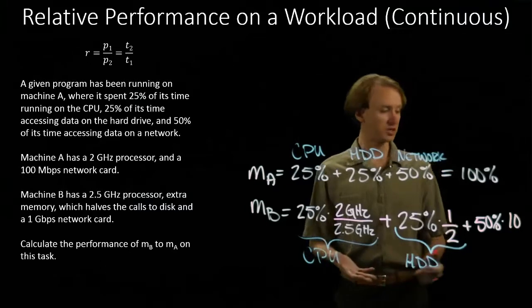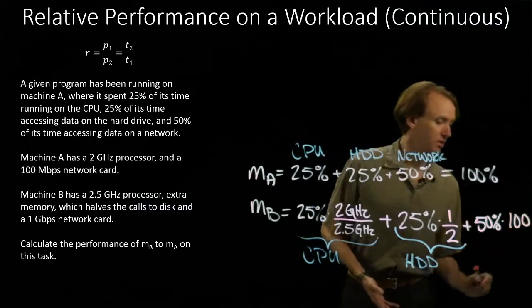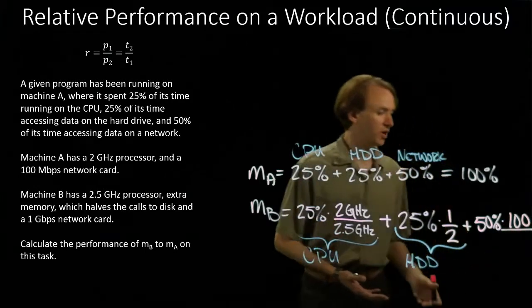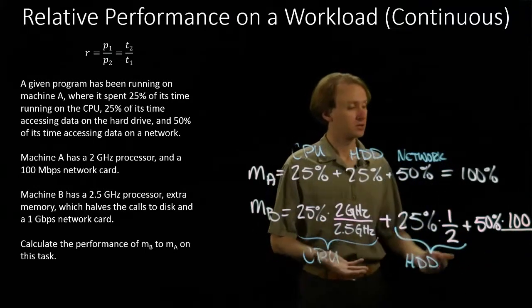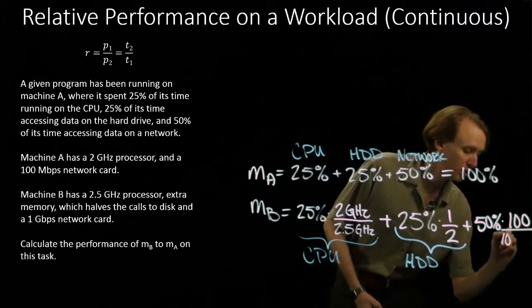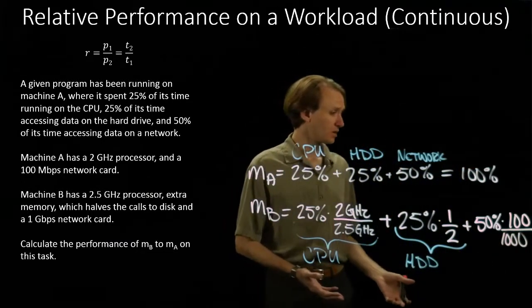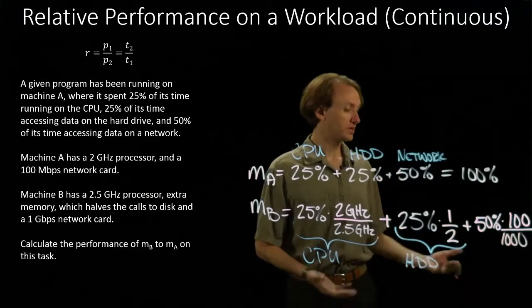So we should expect that if I do the same thing as I did with the CPU, I'm setting up a relative performance ratio. I've got 100 megabits on the top. On the bottom, I'd put one gigabit, which will be 1,000 megabits. So that would be one tenth.